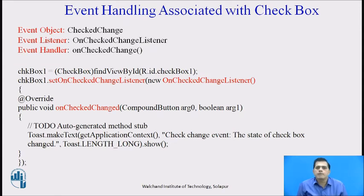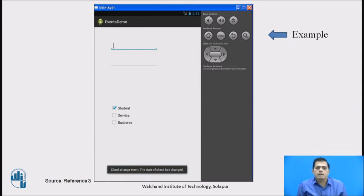Now we will see event handling associated with a CheckBox. The event object used is CheckedChange, the event listener is OnCheckedChangeListener, and the event handler is OnCheckedChange. These handler and listener work together to perform actions with the checkbox. When the user clicks the checkbox, the OnCheckedChange event occurs, and the OnCheckedChangeListener works with the OnCheckedChangeListener interface.